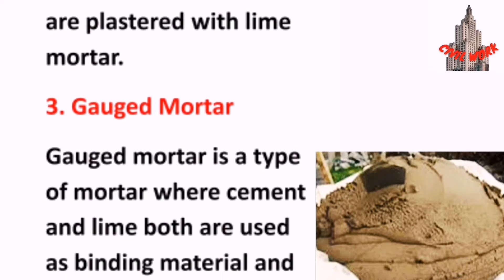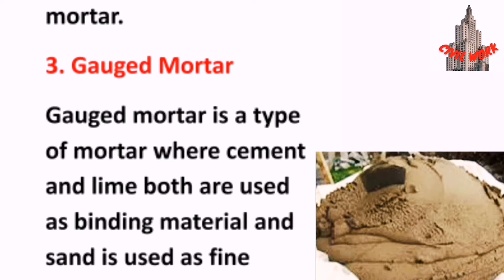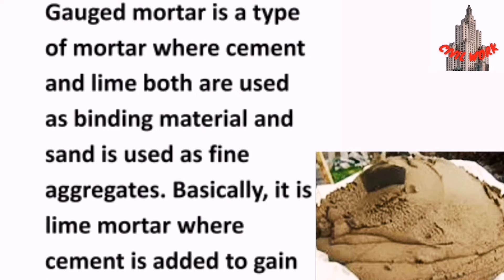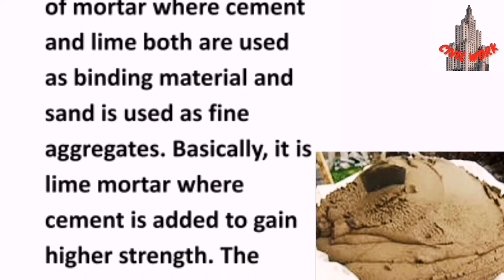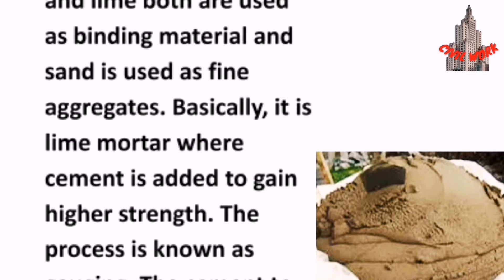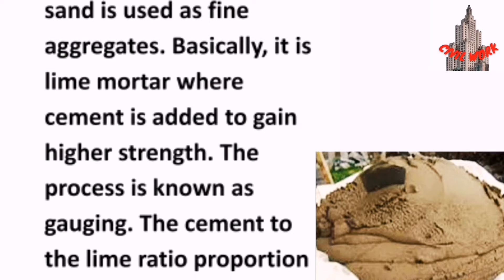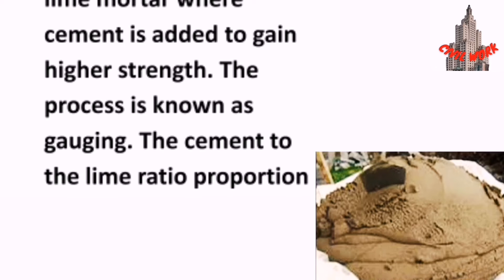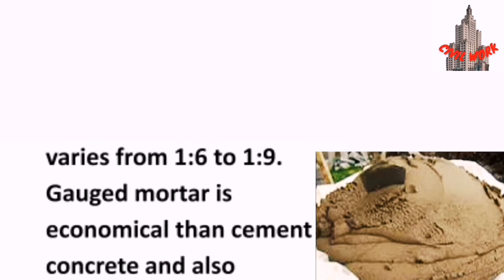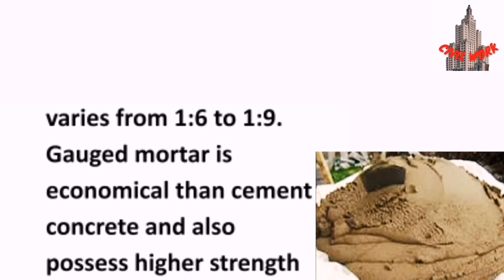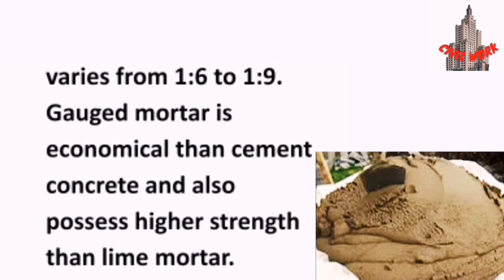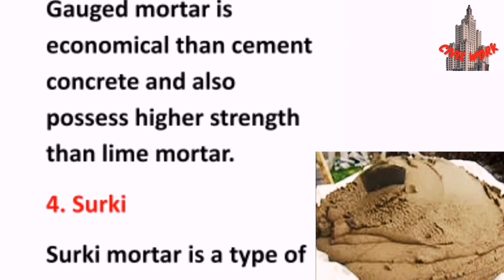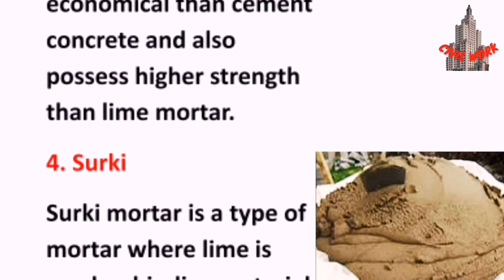Gauged Mortar is a type of mortar where cement and lime both are used as binding material and sand is used as fine aggregates. Basically, it is lime mortar where cement is added to gain higher strength. The process is known as gauging. The cement to lime ratio varies from 1:6 to 1:9. Gauged Mortar is more economical than cement mortar and also possesses higher strength than lime mortar.